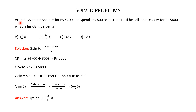Arun buys an old scooter for Rs 4700 and spends Rs 800 on its repairs. If he sells the scooter for Rs 5800, what is his gain percent? You are given 4 answer options and you have to find out which of these answer options is the correct one.